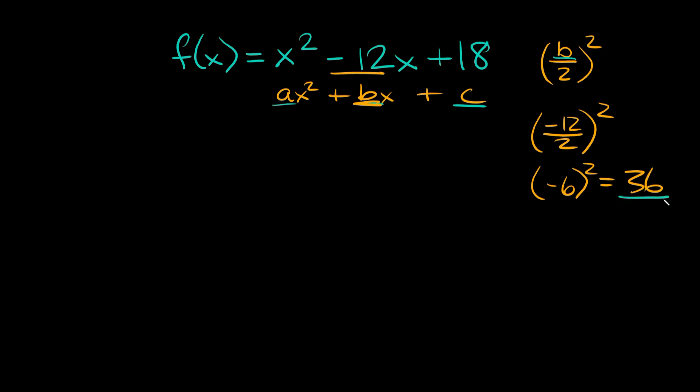We're going to add this number, 36, to both sides of our equation. So we get f(x) + 36, and that's equal to x² - 12x + 18 + 36.